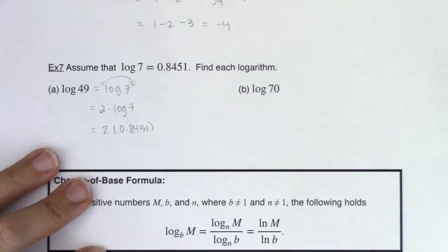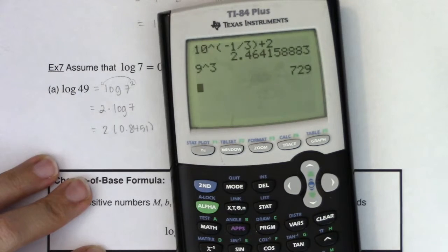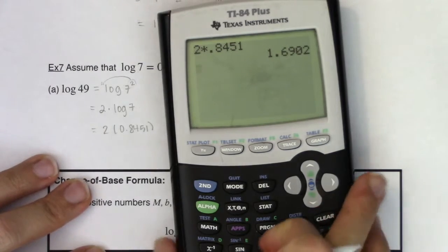So let me head over to my calculator and let's go ahead and do 2 times, let me clear this out, 2 times 0.8451 and we get 1.6902.